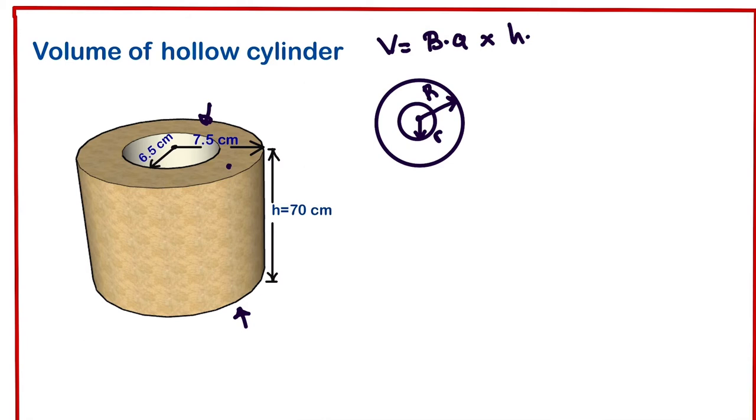How do we get the area of the shaded region? We're still working on the base area. We know the height already, which is 70 centimeters. Looking at this, the external circle, the big one with radius R, is πR².